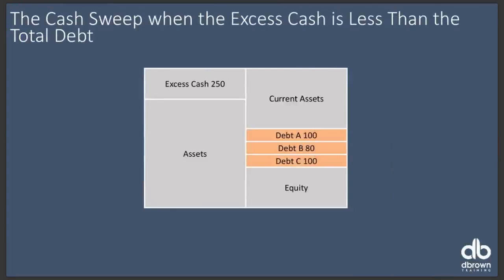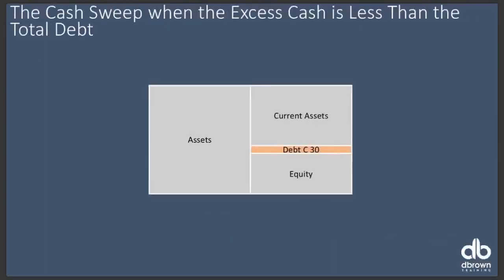Here's an example: when excess cash is less than total debt. You have 250 million in excess cash, and three debts totaling 280 million — say 100, 80, and 100. It doesn't make sense to let that 250 million sit in assets while you're paying interest on 280 million in debt. By sweeping it, you wipe out the 250 million cash and reduce debt from 280 million down to just 30 million remaining.